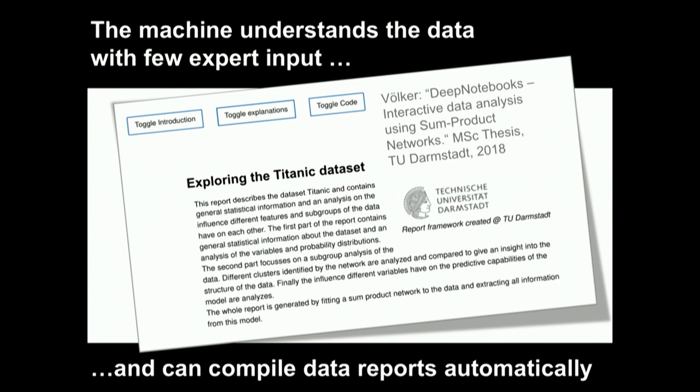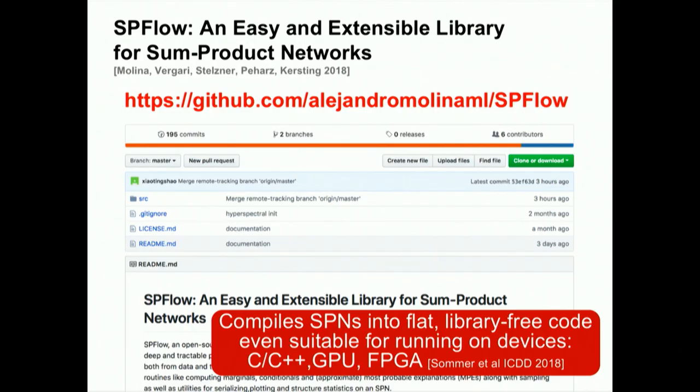You can compute in a tractable way many explainable techniques — inference is linear in the network. You can build grammars that turn your probabilistic model into text describing what is interesting, how much variance is explained by which subpart of your network. This gives what we call deep notebooks: instead of starting with an empty Python notebook, you start with a pre-programmed-by-the-machine notebook so that you already understand a little bit of your data. If you want to try out, you can download the code. I want to emphasize this is all by compilation — you compile into C code, or into specific languages like FPGAs. For at least our models, we are up to 10 times faster than TensorFlow, perhaps because we have rather sparse models higher up in the hierarchy.